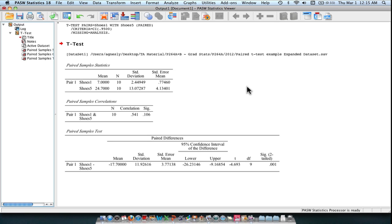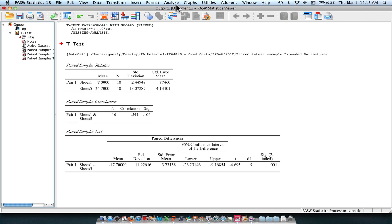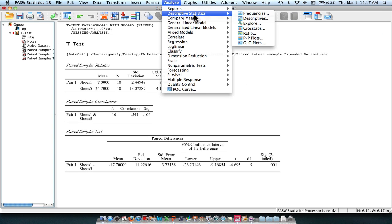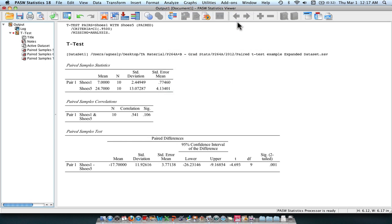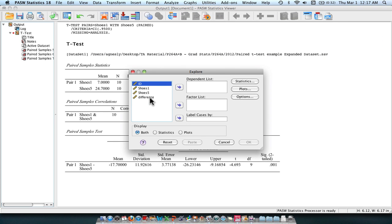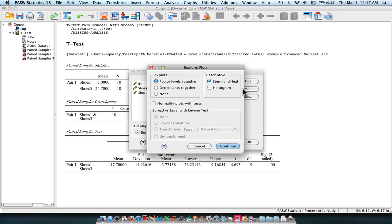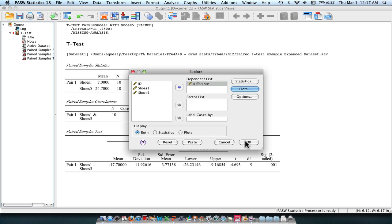So we didn't actually check that assumption. So how can we go back and check that assumption? We can go to Analyze, Descriptive Statistics, Explore. I want to move my difference score that I calculated into my dependent list. And then I want the formal test of whether my variables are normally distributed, and that can be obtained here in our plots options, normality plots or tests. I can unclick stem and leaf, I don't need that, I just need this. Go ahead and press continue, and you can press OK or paste.